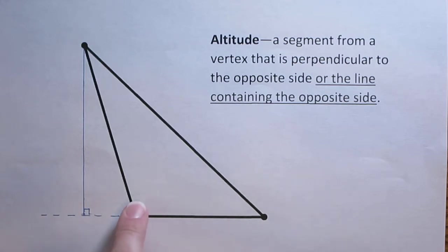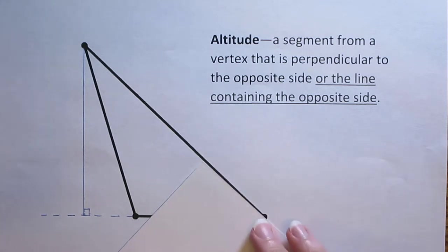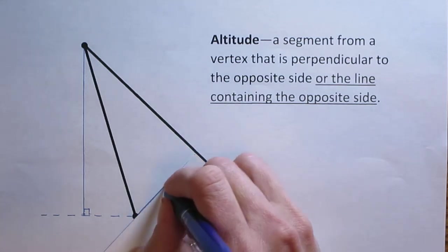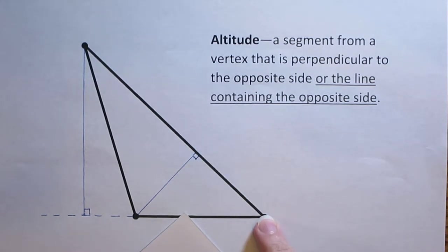Now I can do that for each of my vertices. So again I'll slide my note card along this side of the triangle until it lines up with a vertex. And there we go, lines up with that vertex right there. There's an altitude and then my last one.